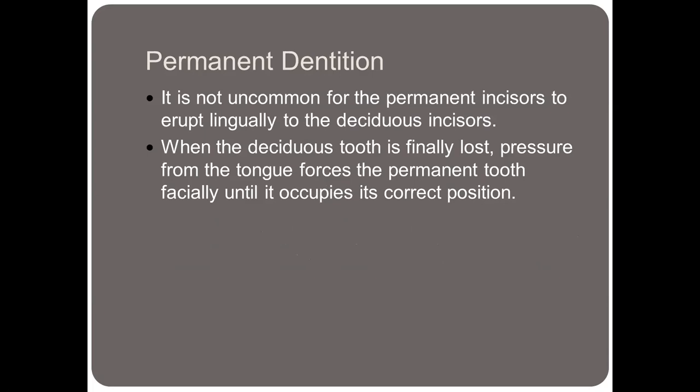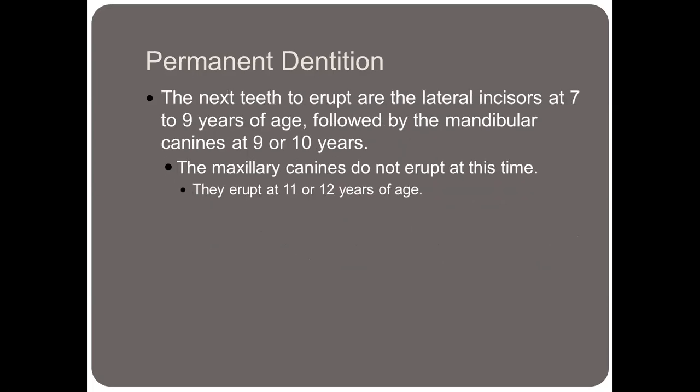It is not uncommon for the permanent incisors to erupt lingually to the deciduous incisors. When the deciduous tooth is finally lost, pressure from the tongue forces the permanent tooth facially until it occupies the correct position. This is when parents call asking about their child having two rows of teeth, and we need to let them know that this is a normal phenomenon.